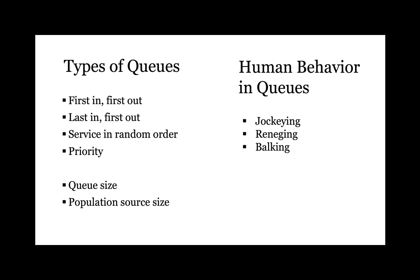It's also important to consider queue size and population source size. An unlimited queue size means the queue can continue indefinitely if necessary, while a limited queue size has a cutoff point where no more customers can join. An infinite population source has an unlimited number of customers that can join, while a finite population source is limited. There are also different human behaviors in queues: jockeying — when someone exits a line to join a shorter one; reneging — when someone decides the wait is too long and removes themselves; and balking — when someone decides not to join the line at all upon first approach because it's too long.